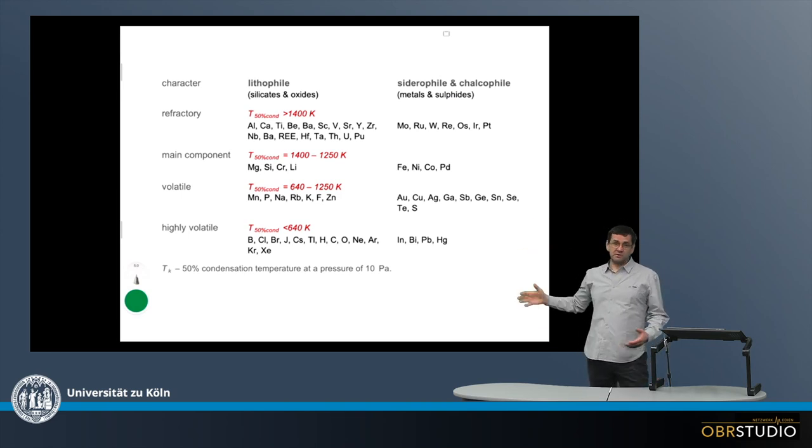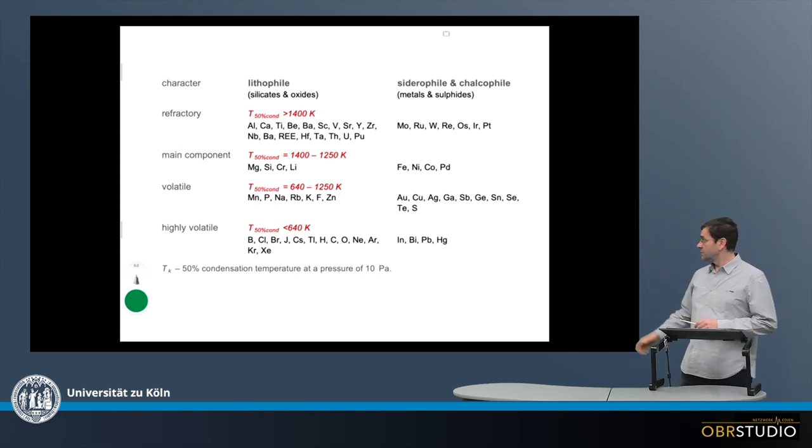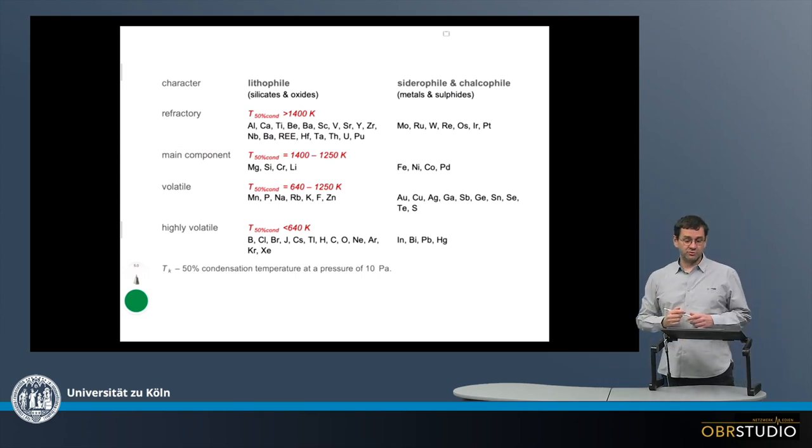This table here summarizes the cosmochemical characteristics of the various elements. In general, there are two groups here.